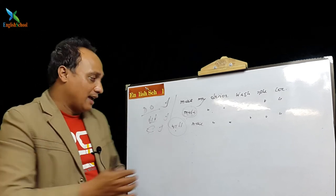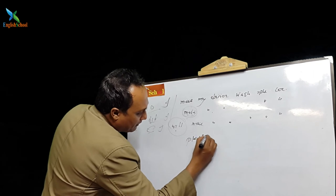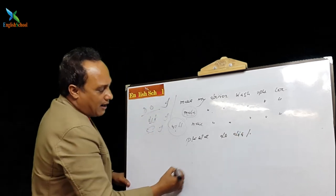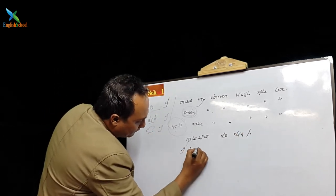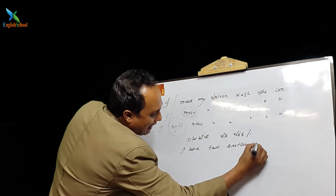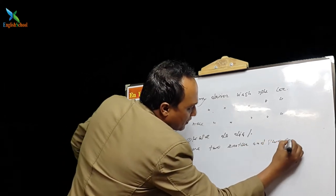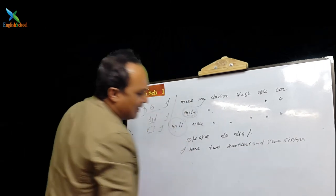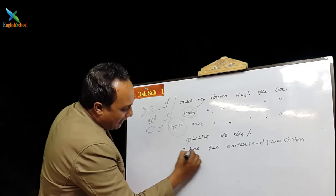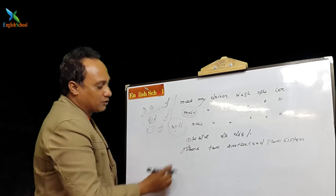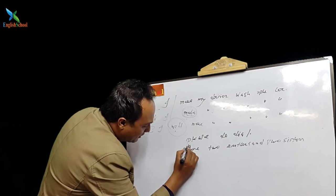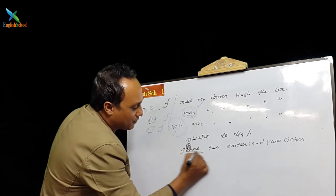In a positive sense, for emphasis we use 'do': for example, 'I do have two brothers and two sisters.' Here, 'do' is used for emphasis, making the statement stronger.